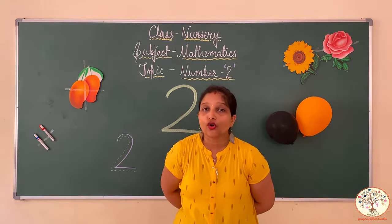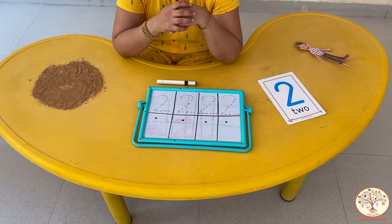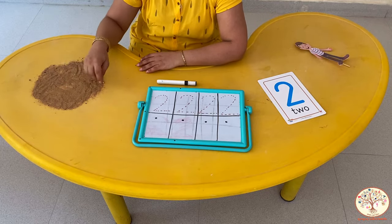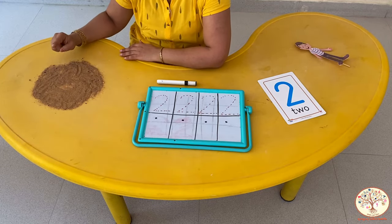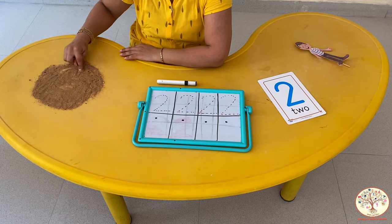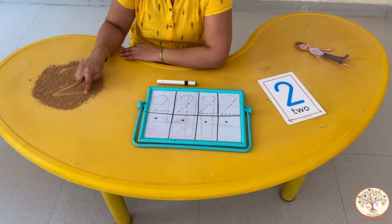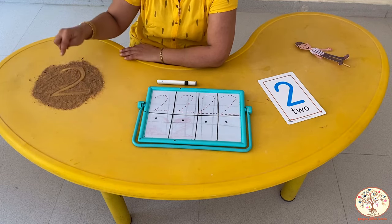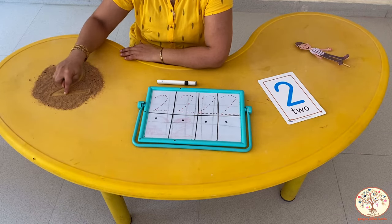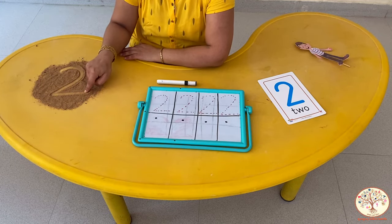Now I will show you on the sand how to write number 2. See, I have got some sand over here. Put your pointer finger on the sand and make a right curve, and then a sleeping line. Do you remember the rhyme? Sing with me: number 2 is like a curve and a sleeping line.